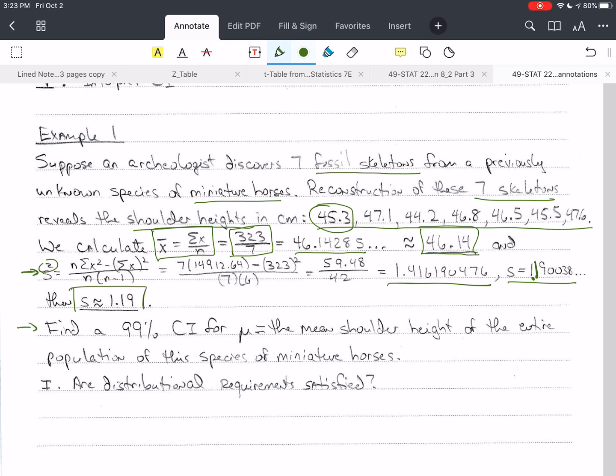Now, here is the question. Find a 99% confidence interval for mu, which is the mean shoulder height of the entire population of this species of miniature horses. I would be cautious about saying it's the entire population, because maybe we've just found the first sample of these miniature horses, and maybe they lived somewhere else in the world and maybe due to environmental conditions, they may have been a different size. But for right now, if this was the only sample we had, we could say as far as we know, this is a confidence interval for the whole population of this species.